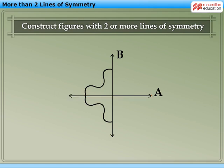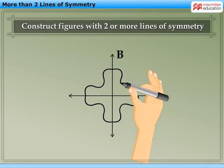Now, we need it to be symmetrical about line B also. So, draw the remaining part of the figure as shown. Thus, this resulting figure has two lines of symmetry.